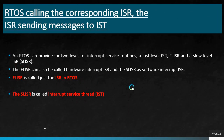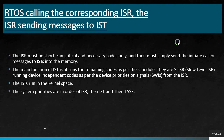RTOS can provide two levels of interrupt service routines: FL ISR (fast level ISR) and SL ISR (slow level ISR). The fast level ISR is also called a hardware interrupt ISR, and the slow level ISR is also called a software interrupt ISR. The fast level ISR is called simply 'the ISR' in RTOS. The slow level ISR is the inter-service thread discussed earlier. ISRs in RTOS must be short, run critical and necessary code only, and simply send initiate codes or messages to the inter-service threads.